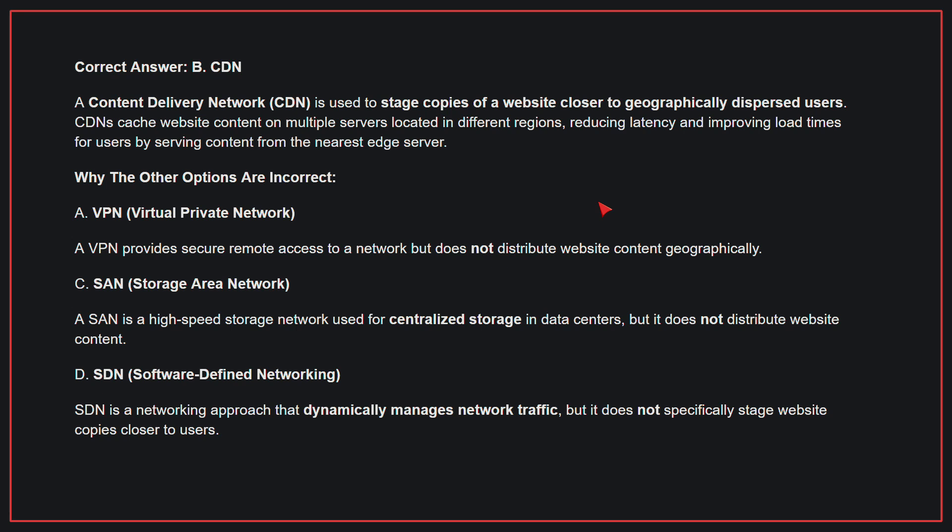Why the other options are incorrect? A, VPN: A VPN provides secure remote access to a network but does not distribute website content geographically. C, SAN: A SAN is a high-speed storage network used for centralized storage in data centers, but it does not distribute website content. D, SDN: SDN is a networking approach that dynamically manages network traffic, but it does not specifically stage website copies closer to users. Therefore, the correct answer is B, CDN.